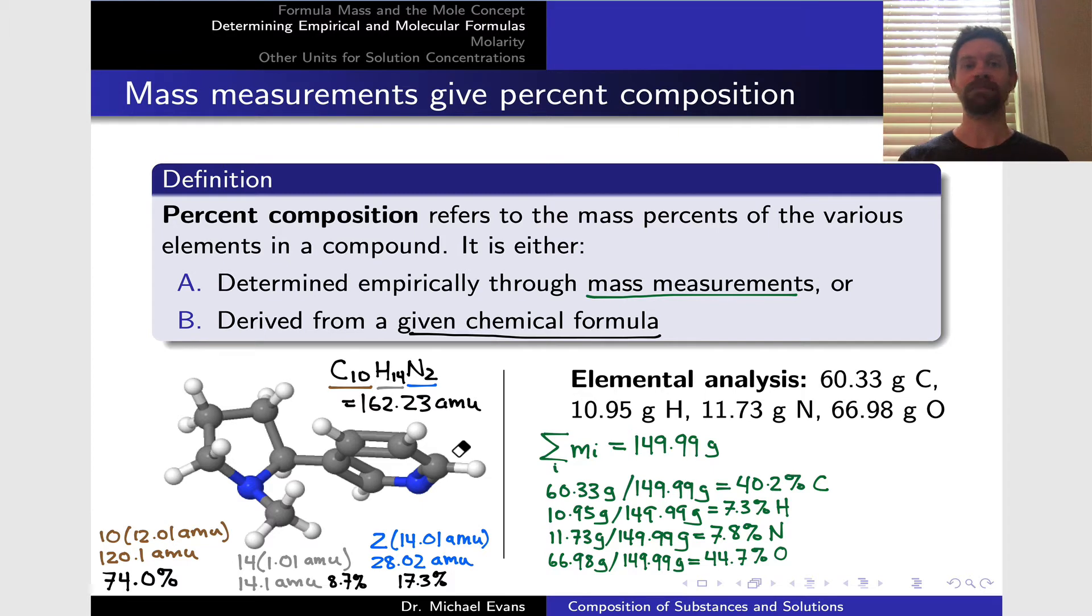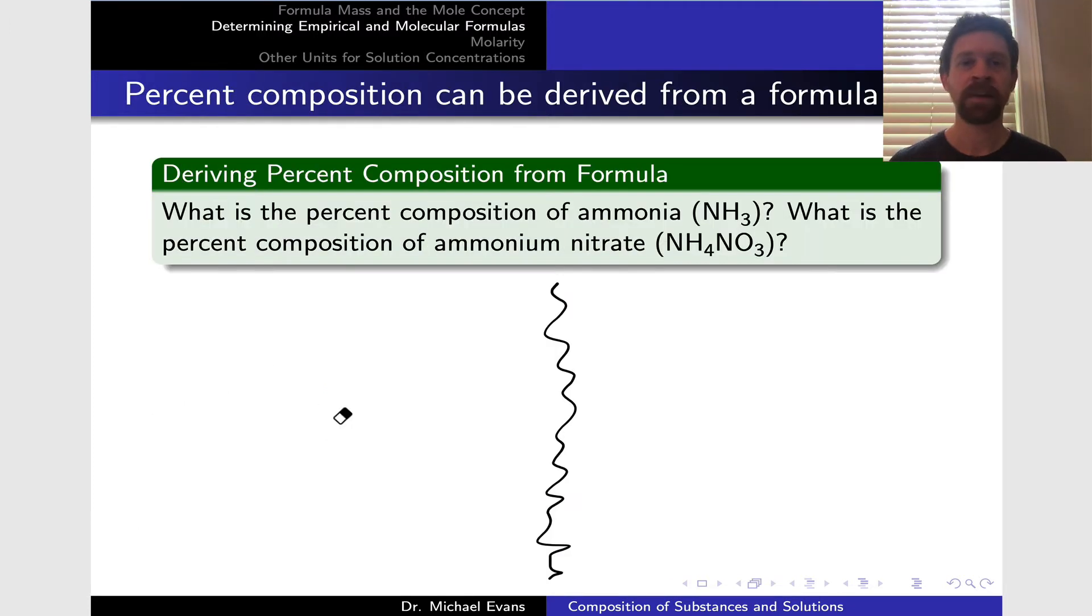We often do both of these and make sure they correspond. If I'm thinking that I made this compound, I need my measured elemental analysis mass percentages to match these numbers to provide verification that this is what I made. Let's look at two more examples of deriving percent mass composition from a molecular or empirical formula.